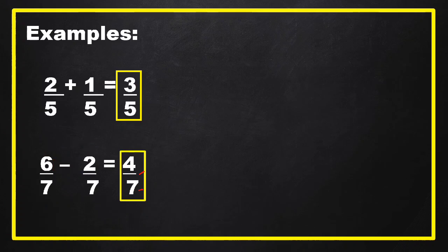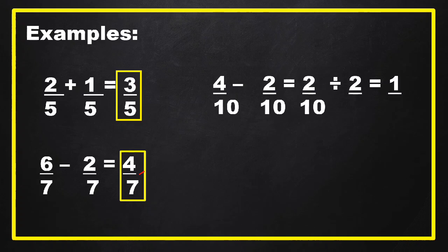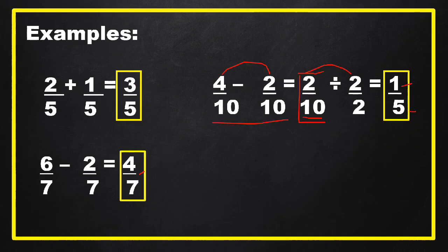Next example: 4 tenths minus 2 tenths. Same denominators, so subtract the numerators only. 4 minus 2 equals 2, then copy 10 as our denominator, giving us 2 over 10. Is there any common factor between 2 and 10? Yes — both are divisible by 2. So 2 divided by 2 equals 1, and 10 divided by 2 equals 5. Our final answer is 1 fifth.